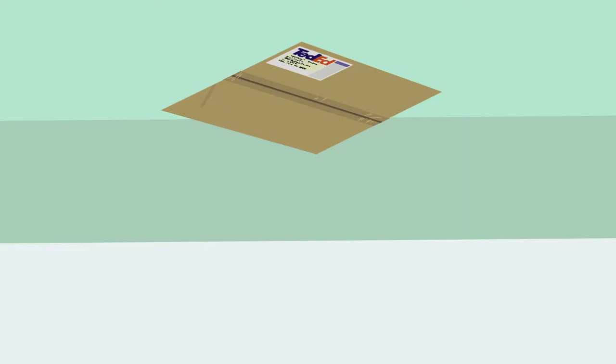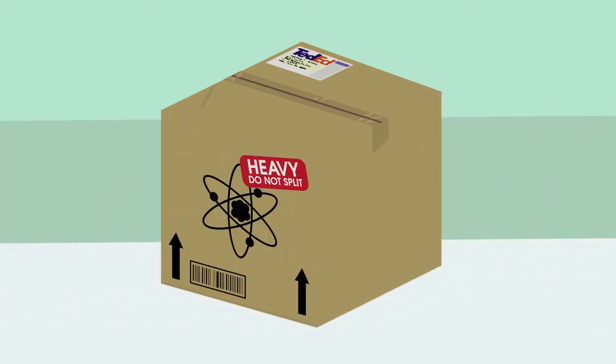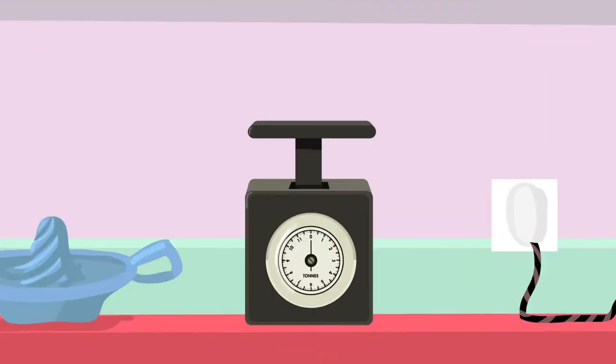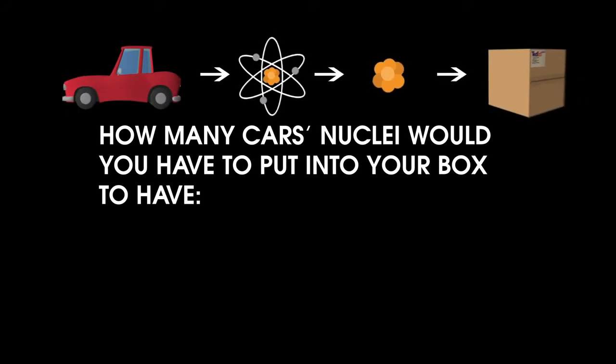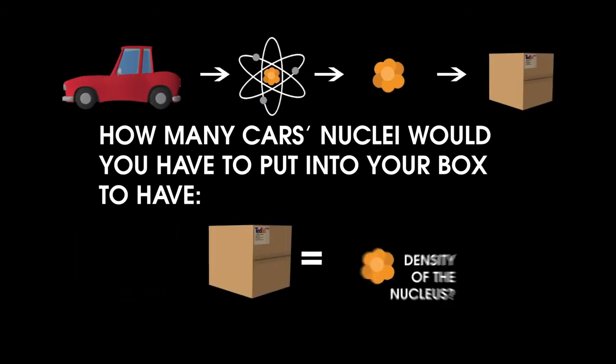Make a box that is one foot by one foot by one foot. And let's go and grab all of the nuclei from a typical car. Now, cars on average weigh two tons. How many cars' nuclei would you have to put into the box to have your one-foot box have the same density of a nucleus?